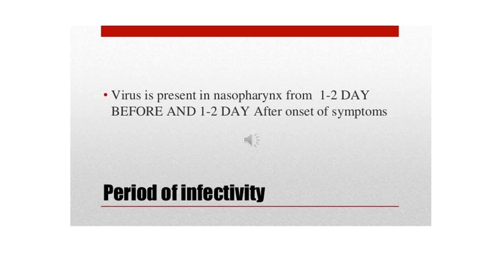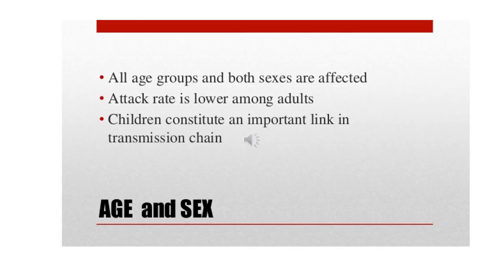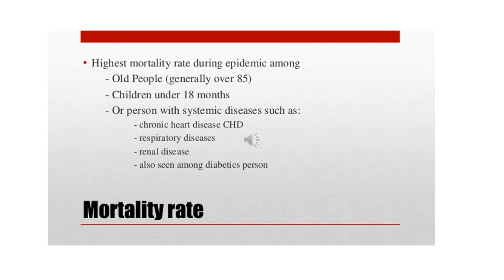The virus is present in the nasopharynx from 1-2 days before and 1-2 days after the onset of symptoms — this is the period of infectivity. All age groups and both males and females are affected. The attack rate is lower among adults, and children constitute an important link in the transmission chain. The most vulnerable age group with highest mortality during an epidemic is old age — generally over 85 years — and children under 18 months. Persons with systemic diseases such as chronic heart disease, respiratory disease, renal disease, and diabetes are also at risk.